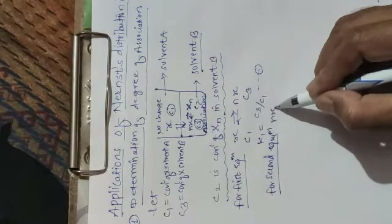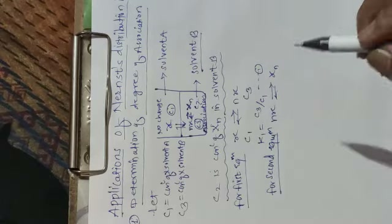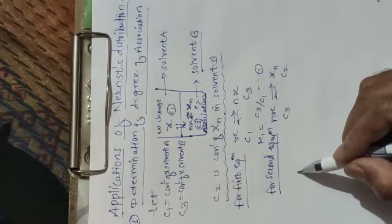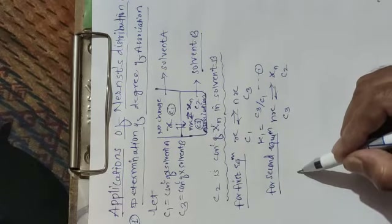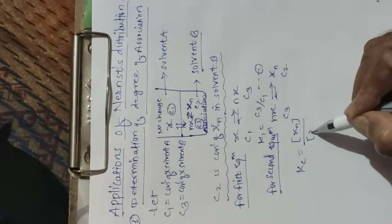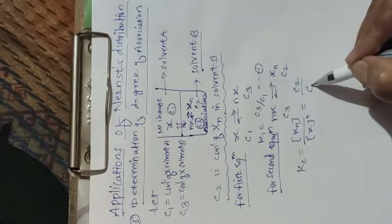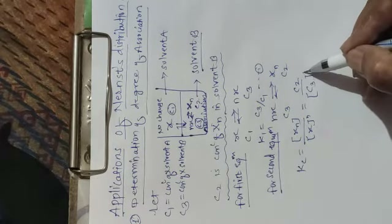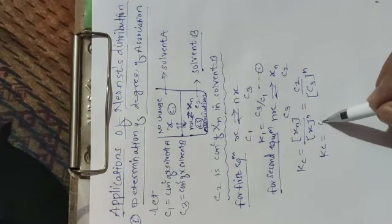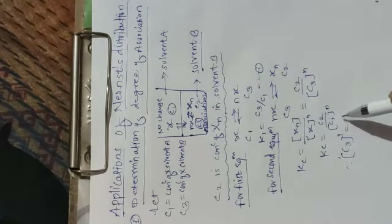For the second equilibrium, nX molecules in solvent B are in equilibrium with Xn (the associated molecule). The concentration of simple molecules is c3 and the concentration of associated molecules is c2. According to the law of mass action, the equilibrium constant kc equals concentration of Xn divided by concentration of X raised to power n, which gives kc = c2 / c3^n.